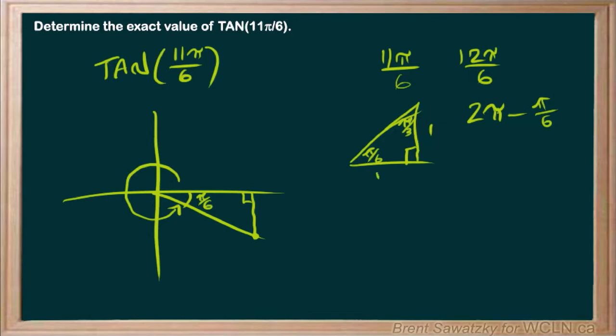And the root 3 is the second biggest one, and the 2 is the biggest one there. So, it helps us remember our special triangle there.